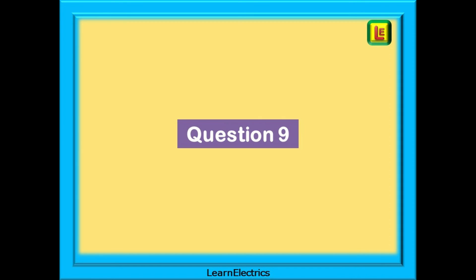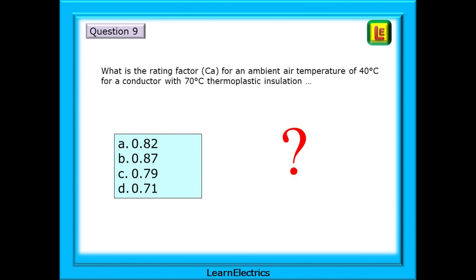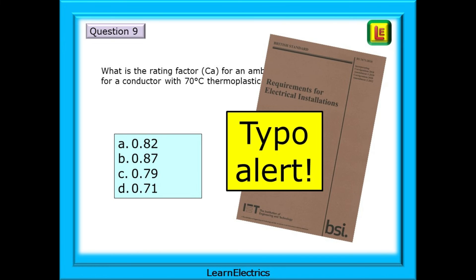Moving on, we have question number 9. What is the rating factor CA for an ambient air temperature of 40 degrees Celsius for a conductor with 70 degree thermoplastic insulation? But hold on before you dash off to find the answer. There is a typo in some of the wiring regulations books. Some of the brown books have been printed with an error which we can sort out right now.